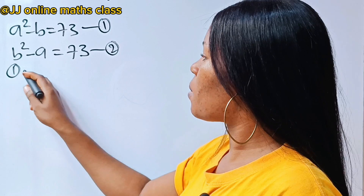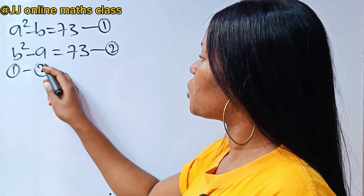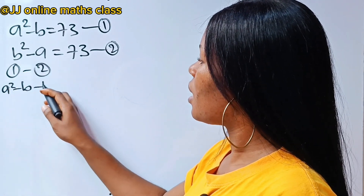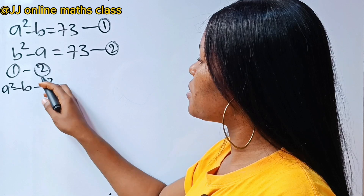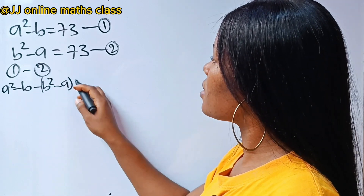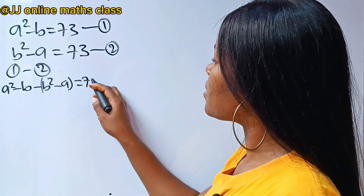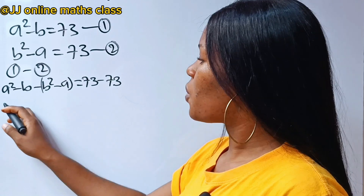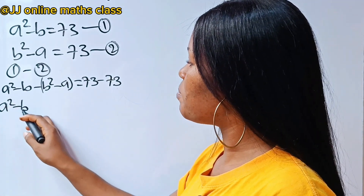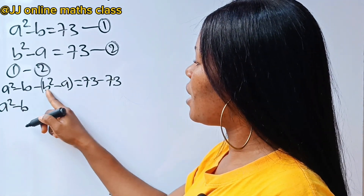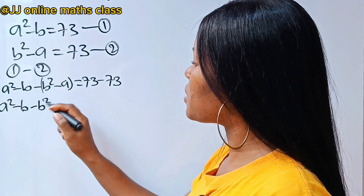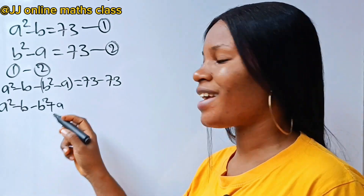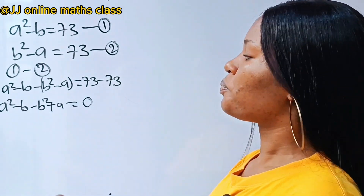So if we say equation 1 minus equation 2, that will be a squared minus b, minus b squared minus a, which is equal to 73 minus 73. So we have a squared minus b squared minus b squared, and minus times minus a gives plus a, equal to 0.